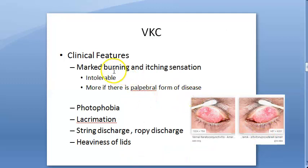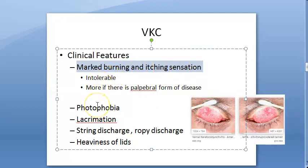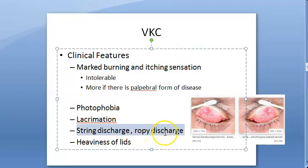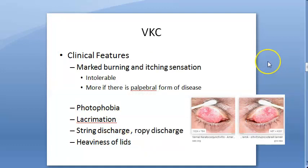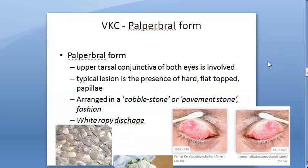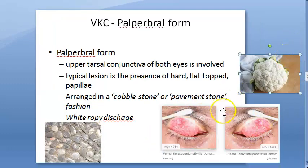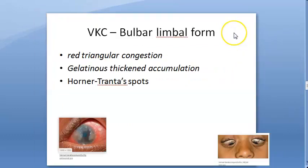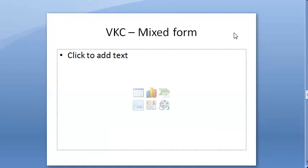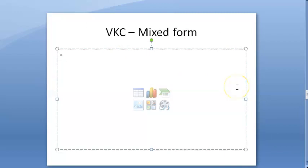Then we saw the vascular layer also — vasodilation will happen, vasopermeability will increase, and there will be a lot of proliferation of these vessels. Then we saw the clinical features: there will be marked burning and itching sensation, intolerable it will be. If the person goes to sun, they really do not like it — they have photophobia, lacrimation, ropy discharge, and heaviness of the lids. In the palpebral form, we saw the cobblestone appearance and ropy white discharge; in severe cases it can become like a cauliflower. In the bulbar limbal form, red triangular congestion, gelatinous thickened accumulation, Horner's spots, Trantas spots. Mixed form also has both features.